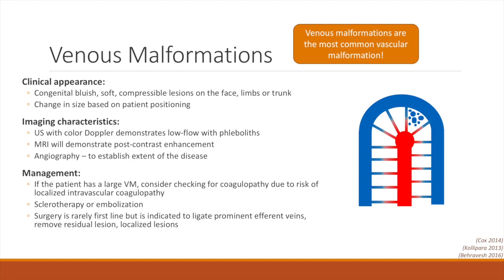Ultrasound with color Doppler is the first line imaging modality and classically will demonstrate low flow chambers that may have hyperechoic flebolists. However, it is important to note that the flow in these malformations may be so slow that it is not picked up on color Doppler, especially if the operator does not adjust the settings to detect low flow. Because of this, the imaging of venous malformations may appear identical to lymphatic malformations on ultrasound. Therefore, MRI can be performed to further differentiate between these two.